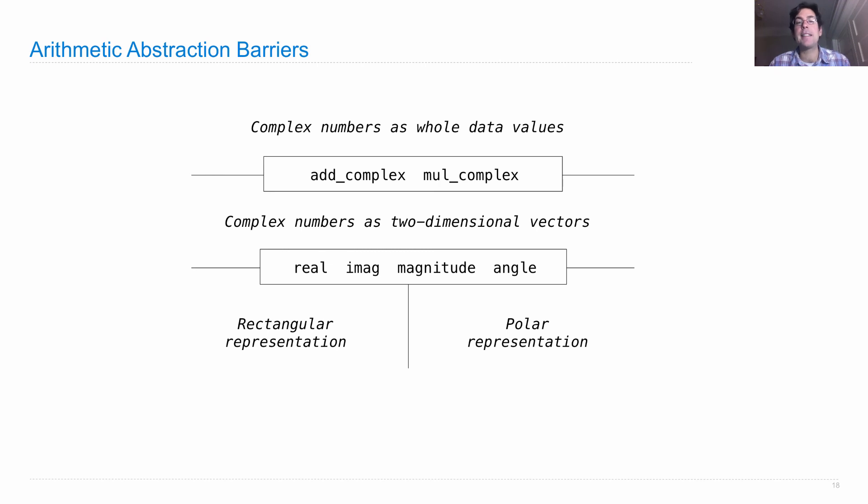And then at the very highest level of abstraction, complex numbers are just whole data values. The only thing we can do with them is add them together, multiply them, and store them and pass them around. So this is the structure that we want to create in our code.